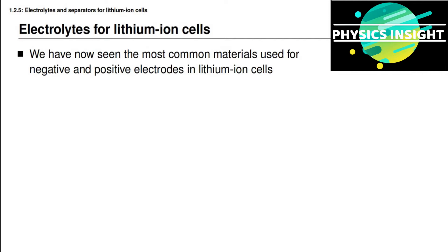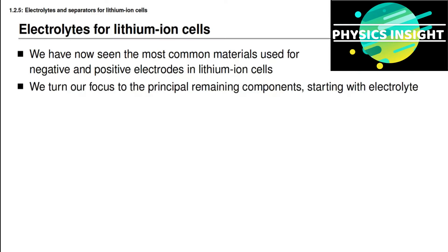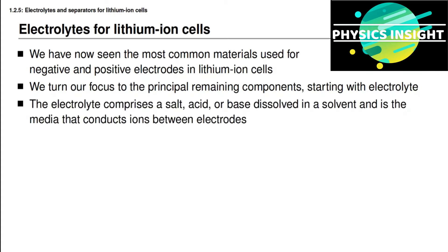In the last two lessons, you've seen that the most common materials used in negative and positive electrodes in lithium-ion battery cells are graphite in the negative electrode and some other common materials in the positive electrode. In this lesson, you will learn about the electrolytes and the separators for these cells, and we start by looking at the electrolyte.